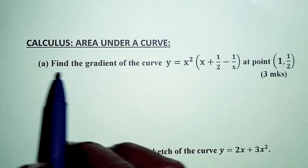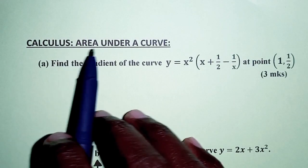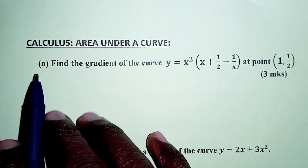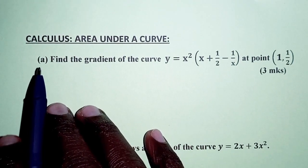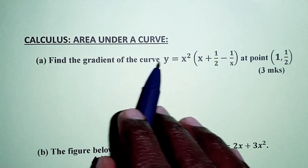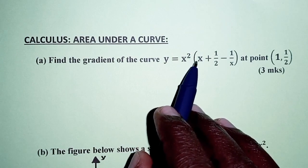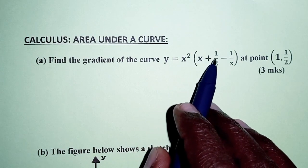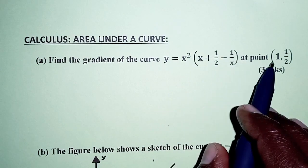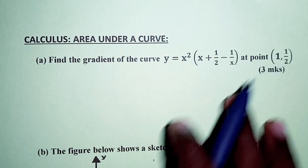Hello everyone. Today's question is about calculus, area and a curve. Part A of the question: find the gradient of the curve y equals x squared times (x plus a half minus 1 over x) at the point (1, 1/2).